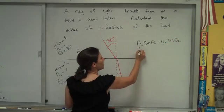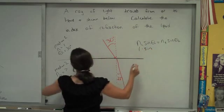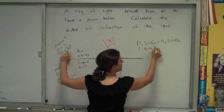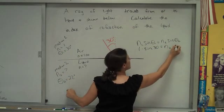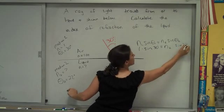So I'm going to sub in for air, 1 times sine of 30 degrees is equal to n2 times sine of 22 degrees.